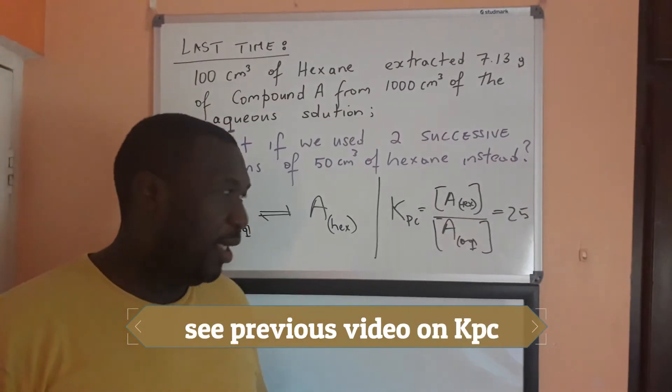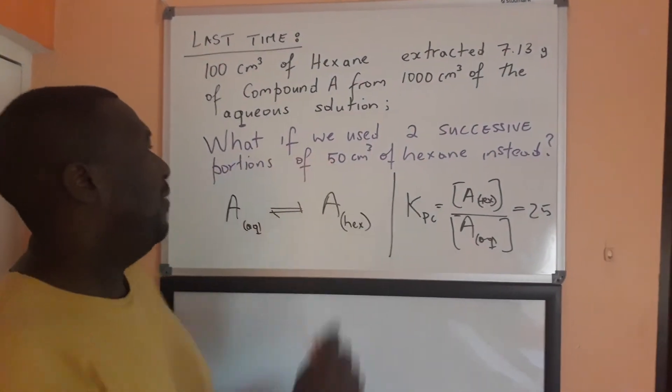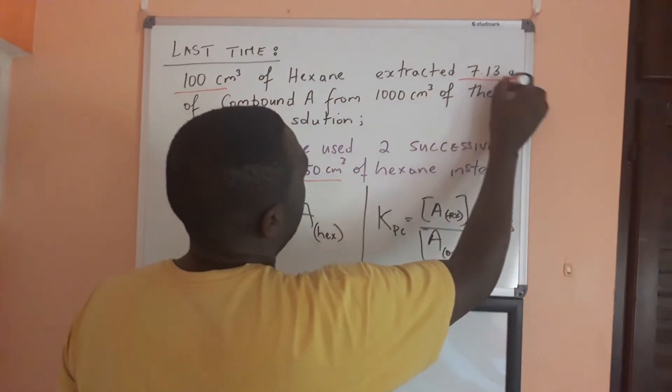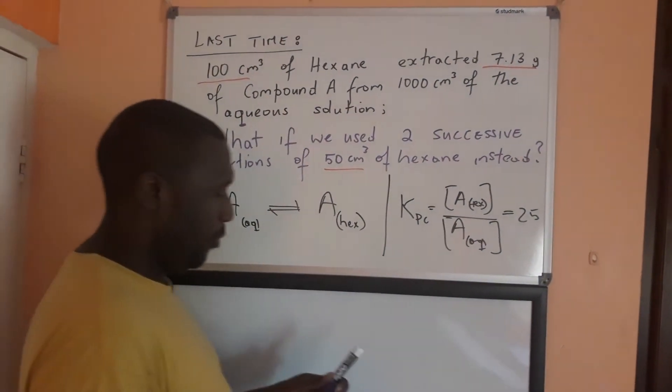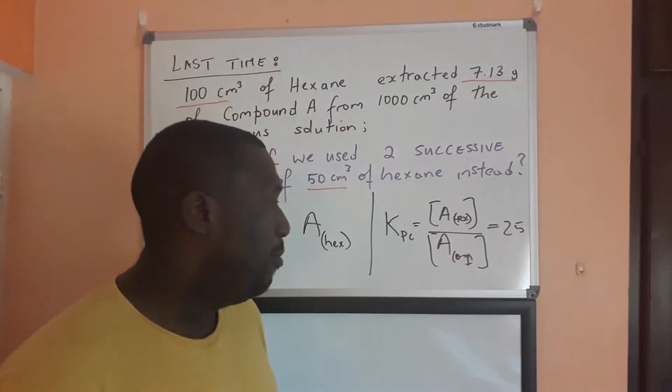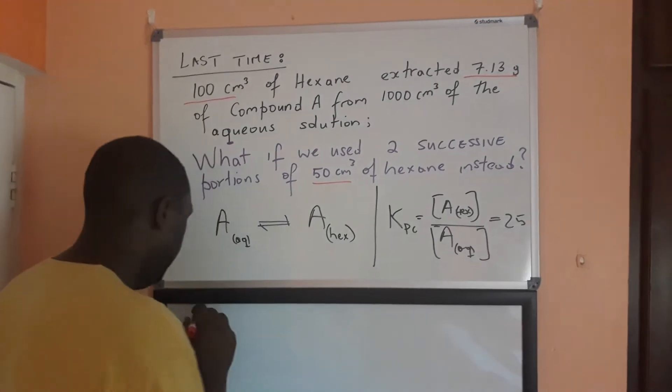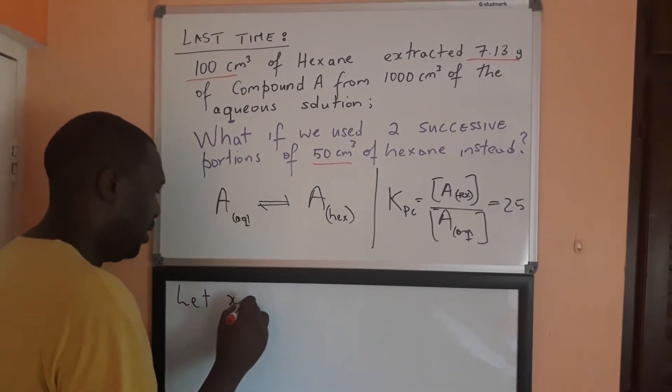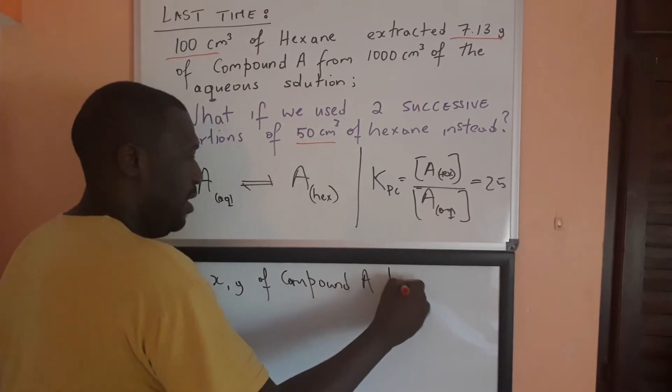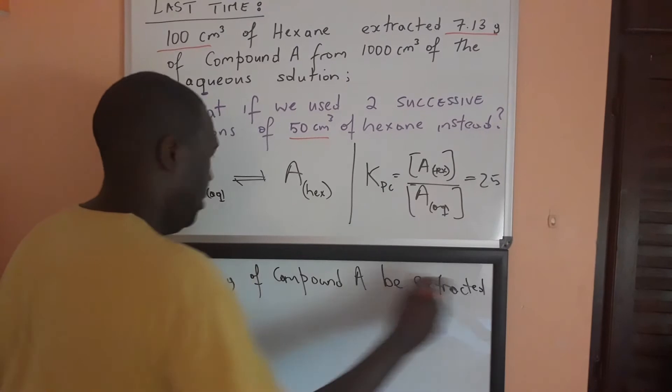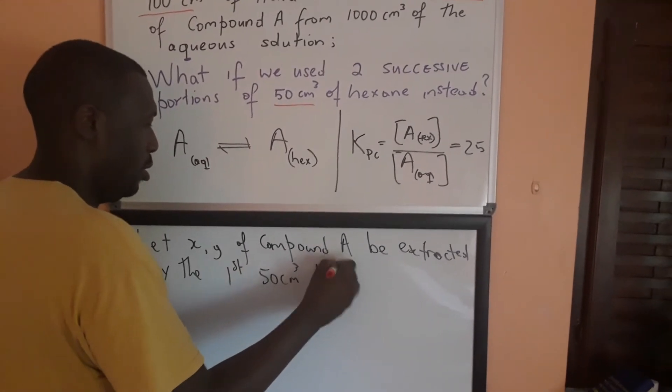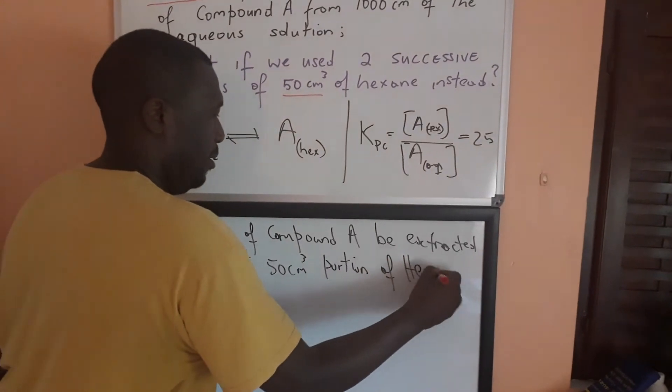Now, in this situation now, we're going to be looking at how much would I extract if I use two 50 cm³ portions instead of the whole 100 cm³ portion? Now, remember the whole 100 cm³ portion extracted 7.13 grams. So, we don't know how much each 50 cm³ portion is going to extract, so we're going to have to use a variable. So, my first assumption is going to be, let X grams of compound A be extracted by the first 50 cm³ portion of hexane.